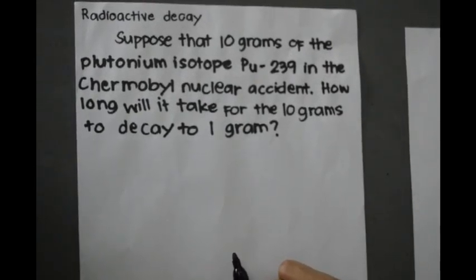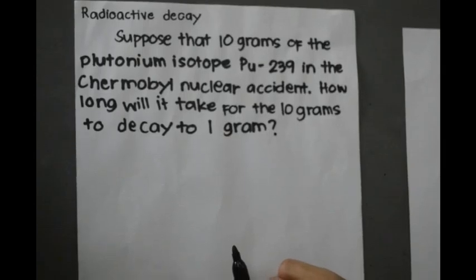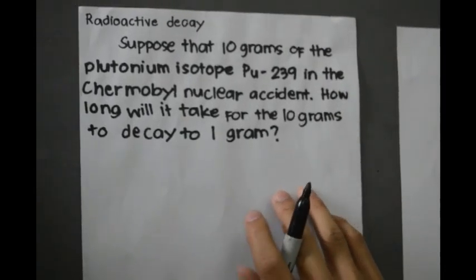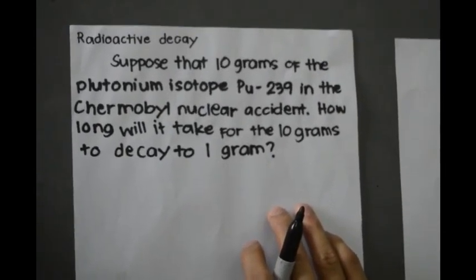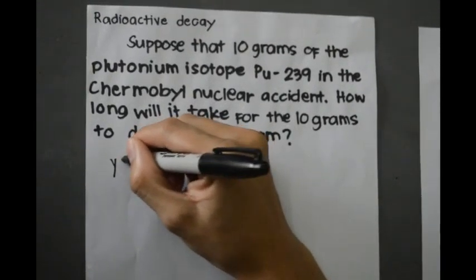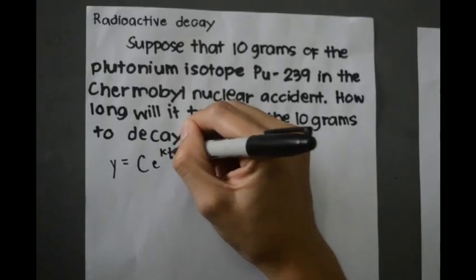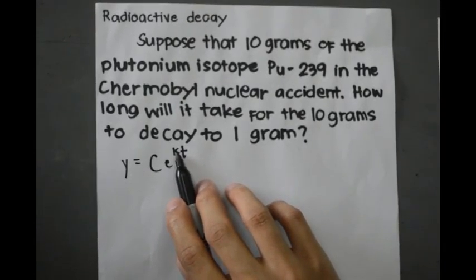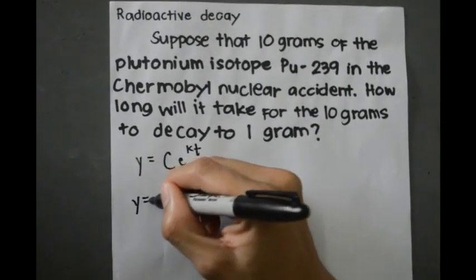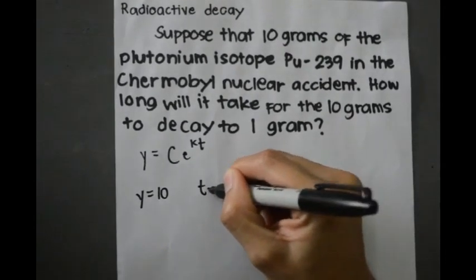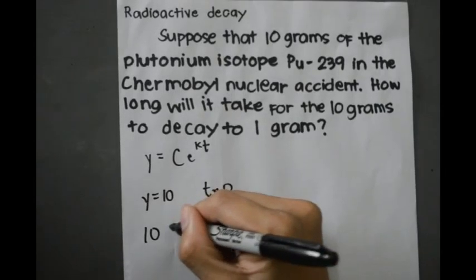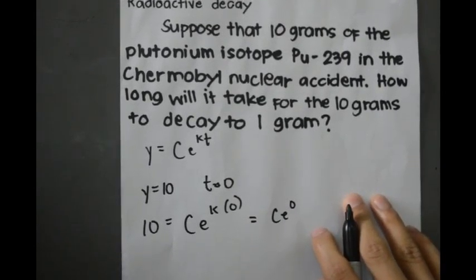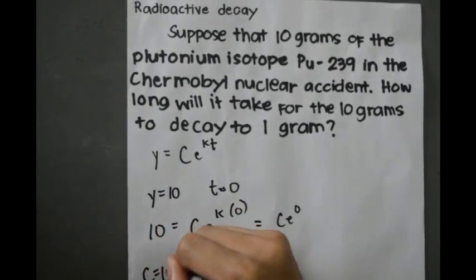Suppose that 10 grams of the plutonium isotope PU-239 from the Chernobyl nuclear accident — how long will it take for the 10 grams to decay to 1 gram? Let y represent the mass in grams of the plutonium. Because the rate of decay is proportional to y, we have y equals c times e raised to kt, where t is the time in years. Applying the initial condition y equals 10 when t equals 0, we get c equals 10.